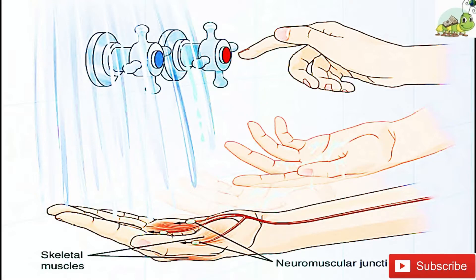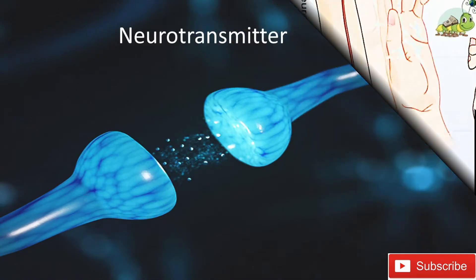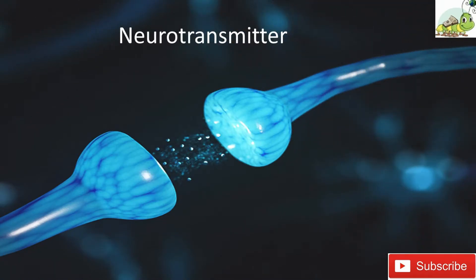The neurotransmitter diffuses across the short distance of the synapse and binds to a receptor protein of the target neuron. When the molecular signal binds to the receptor, the cell membrane of the target neuron changes its electrical state and a new graded potential begins. If that graded potential is strong enough to reach threshold, the second neuron generates an action potential at its axon hillock.